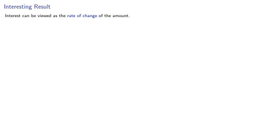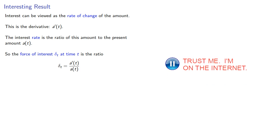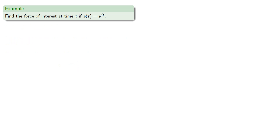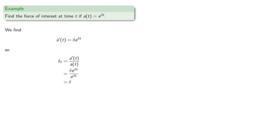We'll need a little more calculus. Interest can be viewed as the rate of change of the amount, which is just the derivative a'(t). The interest rate is the ratio of this amount to the present amount a(t). So the force of interest delta(t) at time t is the ratio a'(t) divided by a(t). For example, if a(t) is e to the power delta*t, we find the derivative, compute the quotient, and simplify — the force of interest is delta, which is what it should be, because our accumulation function is what we'd get with interest rate delta compounded continuously.